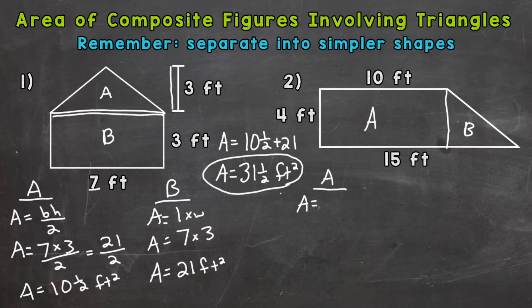The formula for rectangle: length times width. Let's plug in length. I'm going to use, don't use the 15 feet. The 15 feet goes all the way across. We just want this 10 feet here. So 10 times 4, and the area is going to be 40 square feet for the rectangle.